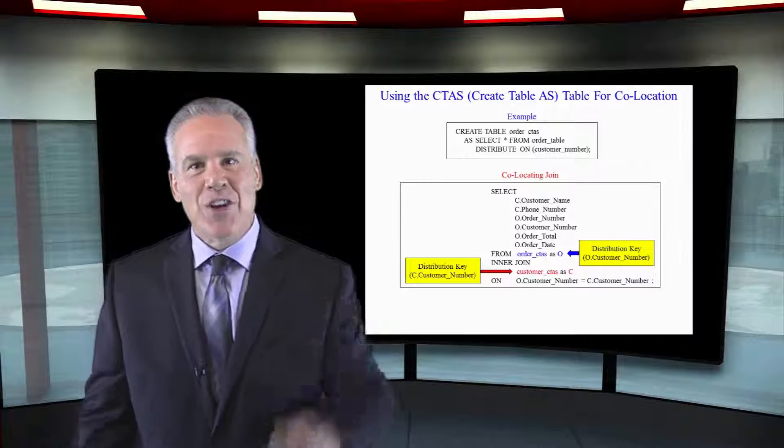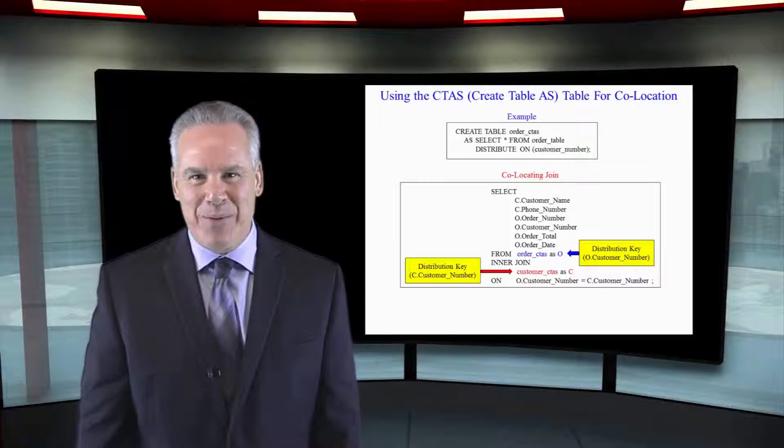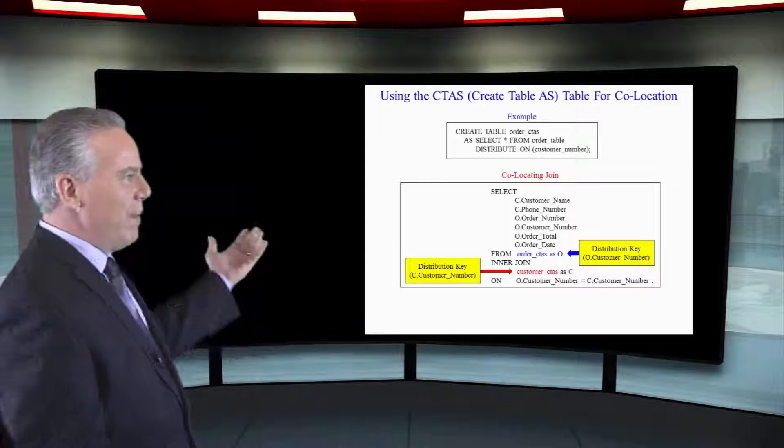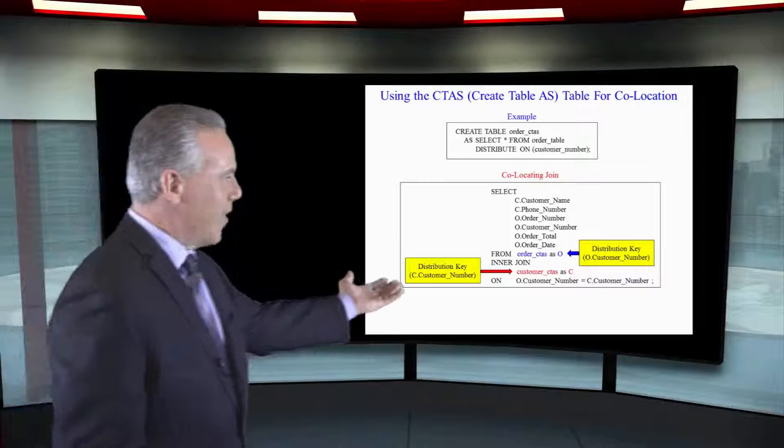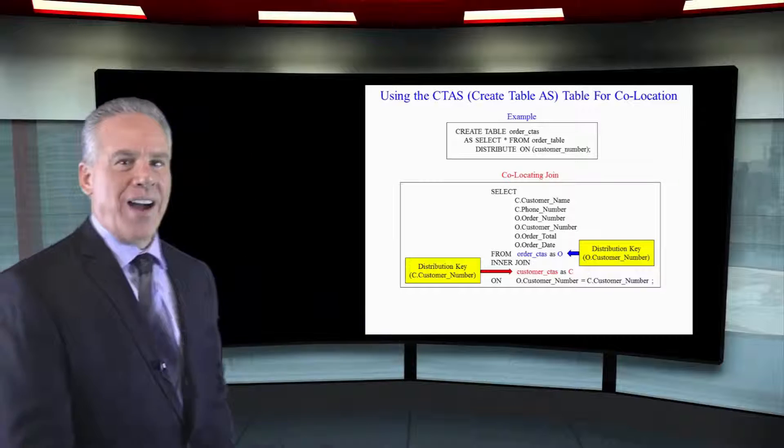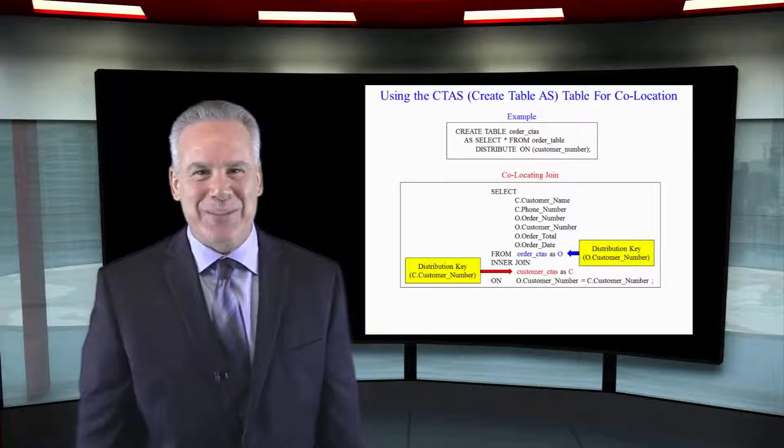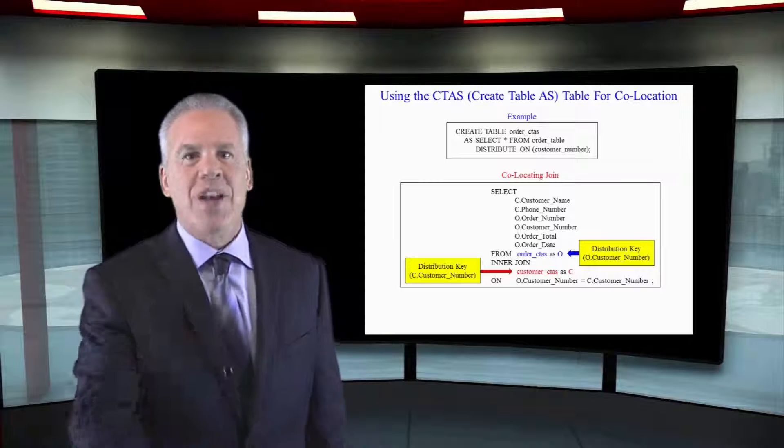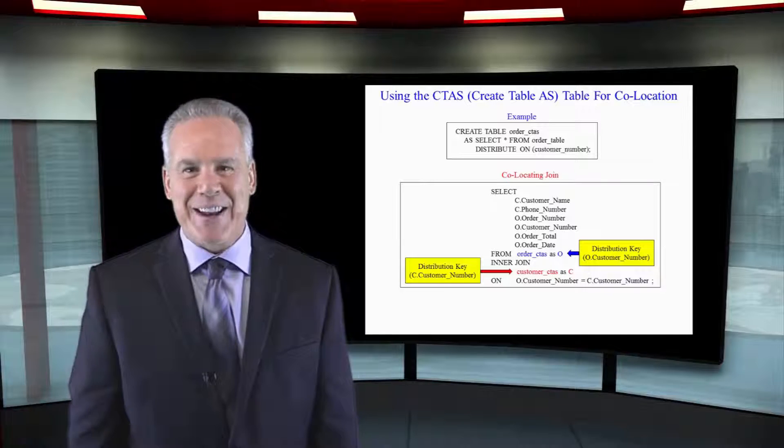and we join this to the actual customer table, you can see here that both of these tables are distributed on customer number, and they're joining on customer number equals customer number. That is one of the best reasons to create a CTOS table.